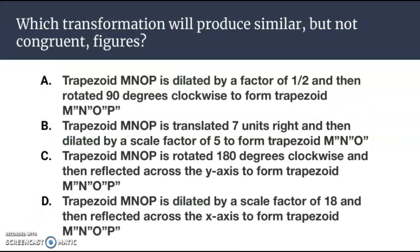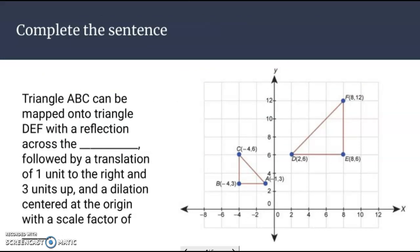Let's look at a visual here. We're just going to complete the sentence here. So we have two triangles, ABC, and DEF. And obviously, we have some transformations going on. First of all, it looks like it was reflected across the y-axis, and it even tells us what else happened. There was a translation of one unit to the right, so it shifted one to the right, and then three units up.